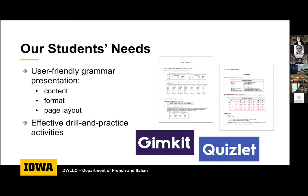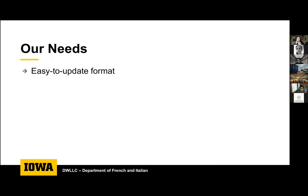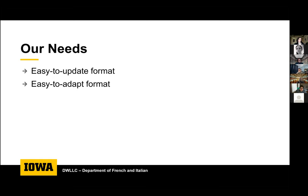After considering student needs, we had to merge them with our own needs. We wanted a format that was easy to update — with grammar and Italian culture, there's always new content to add. We also wanted a format easy to adapt across our elementary Italian one and two courses, an intensive combined course, and potentially a course like Italian for the Professions. Another important need was integration into ICON for easy access.